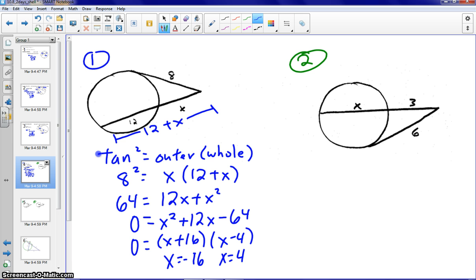X equals positive 4. Now let's double check. Will both of those work? And as we can see, as soon as we plug in that negative 16 into X, we would have a negative value for the external part of the secant. Therefore, that would not work. We would only get X equals 4.